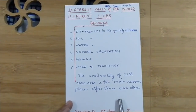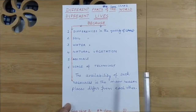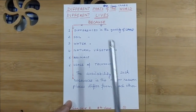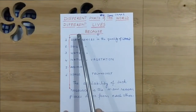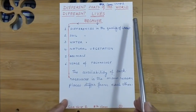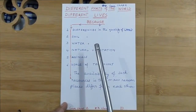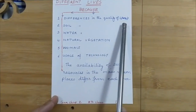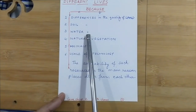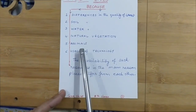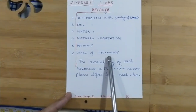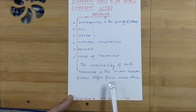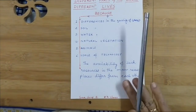Now, when we are talking about Peter and Mamba living in two different parts of the world, we ask: why do different parts of the world have different lifestyles or different livelihoods for people? That is because of the difference in the quality of the land, difference in soil, water, natural vegetation, animals, and usage of technology. The availability of such resources is the main reason places differ from each other.